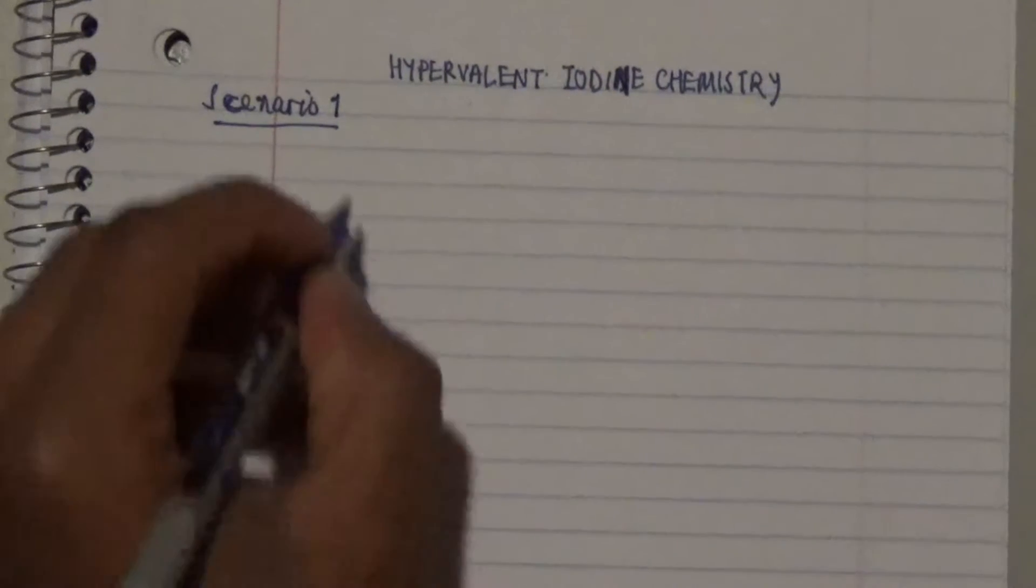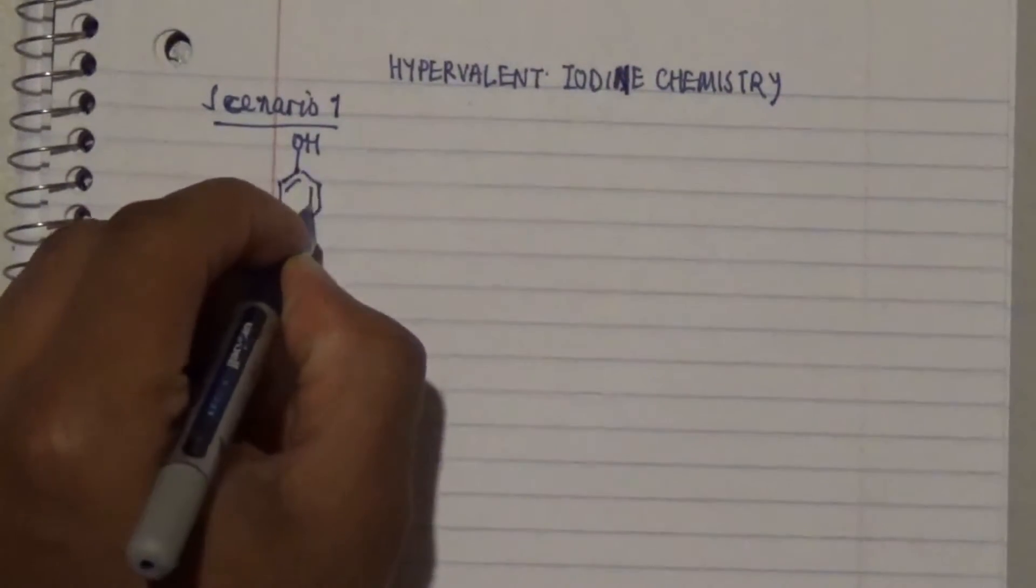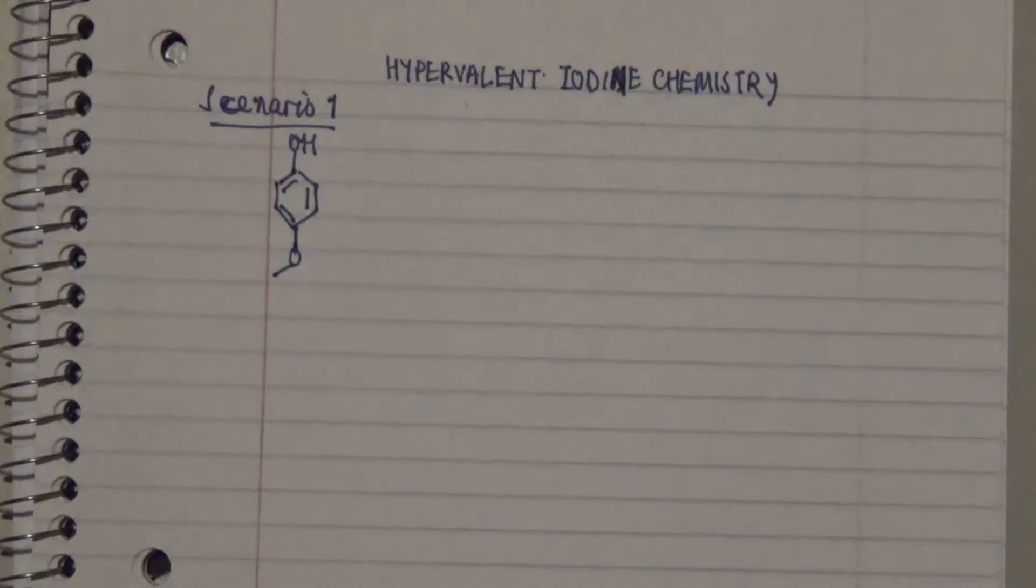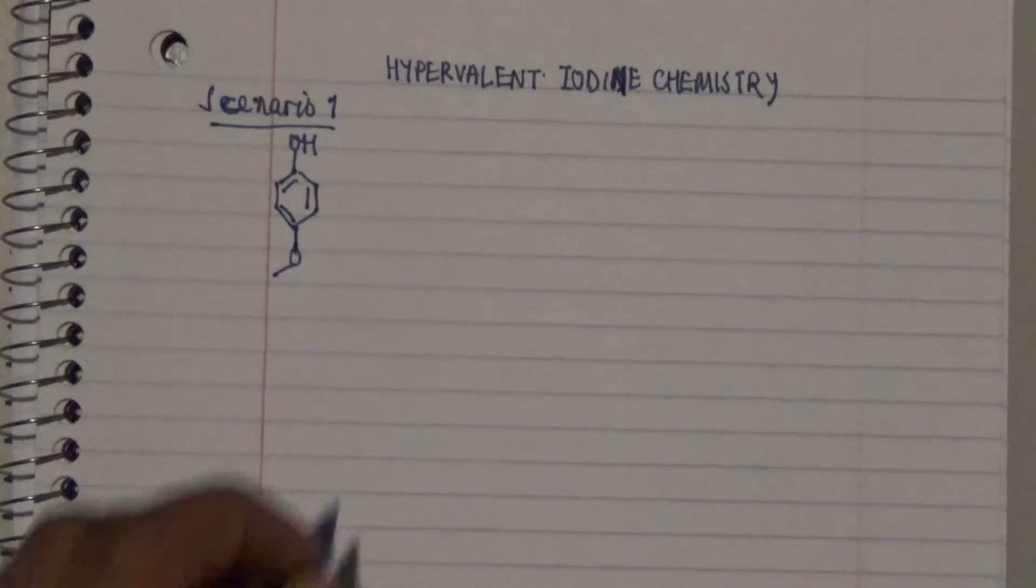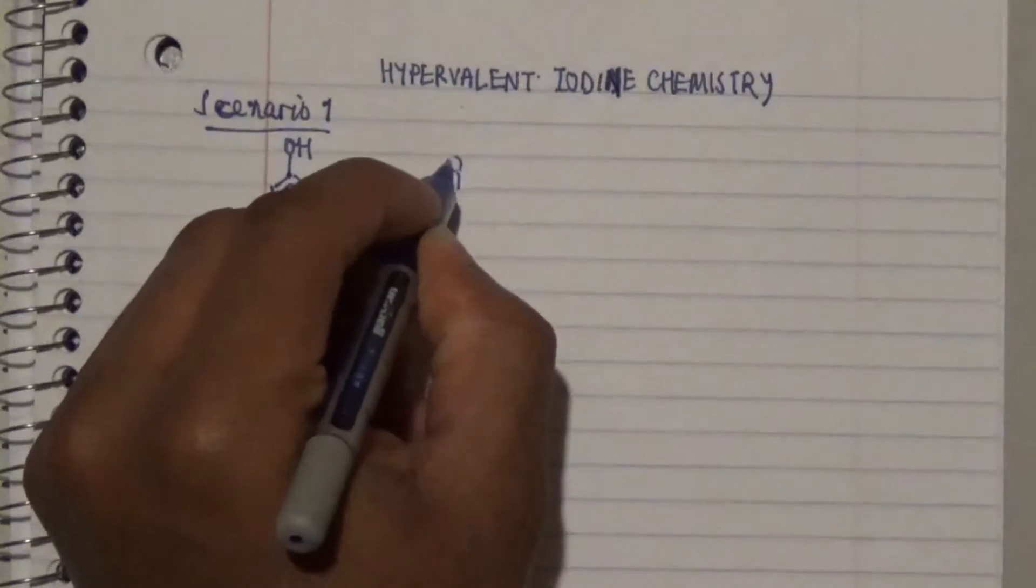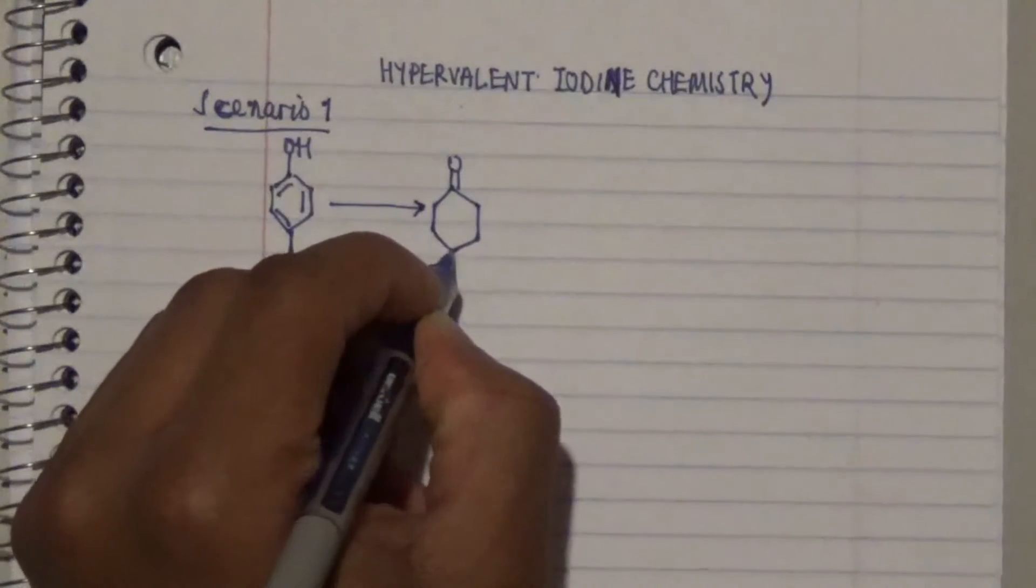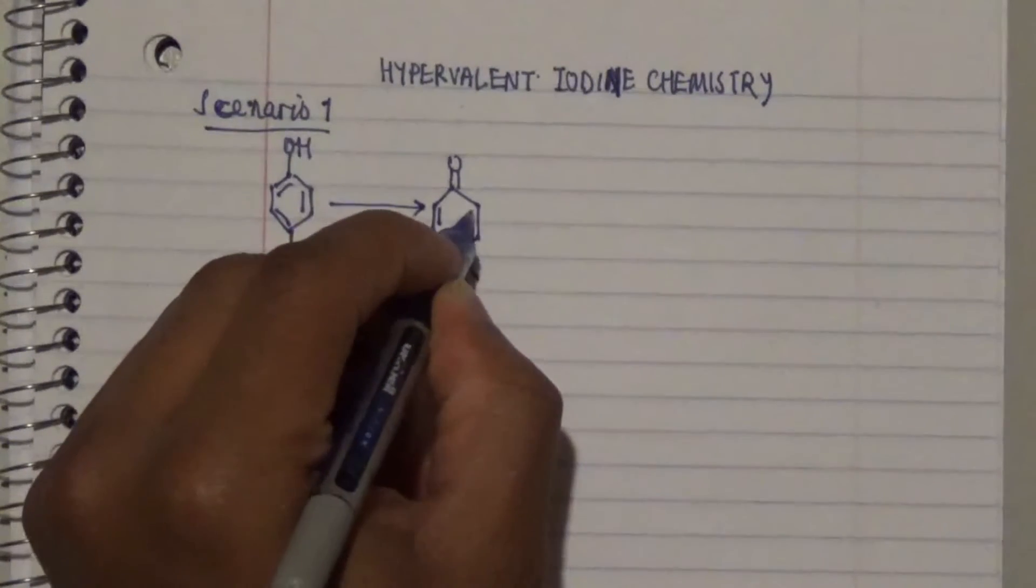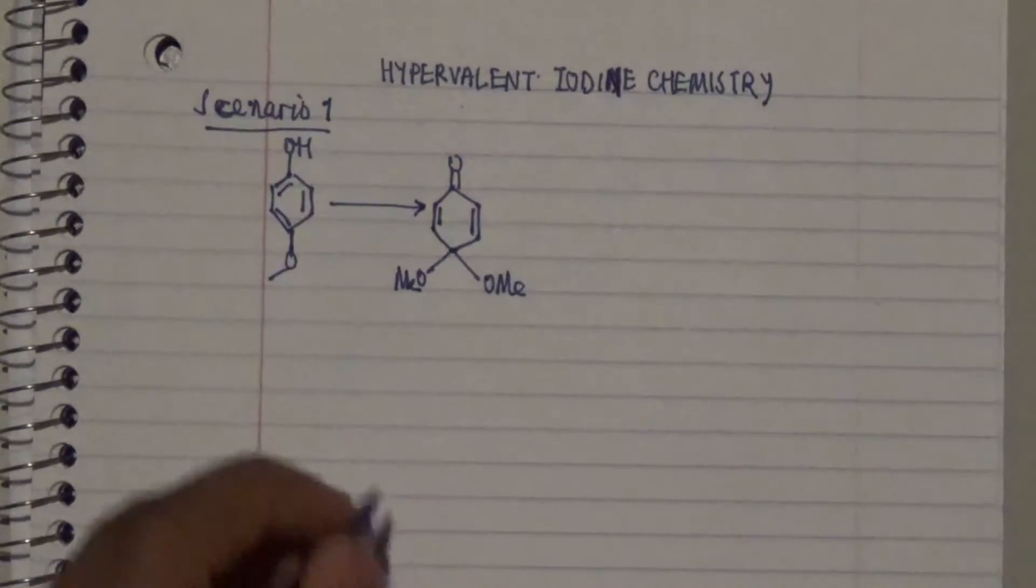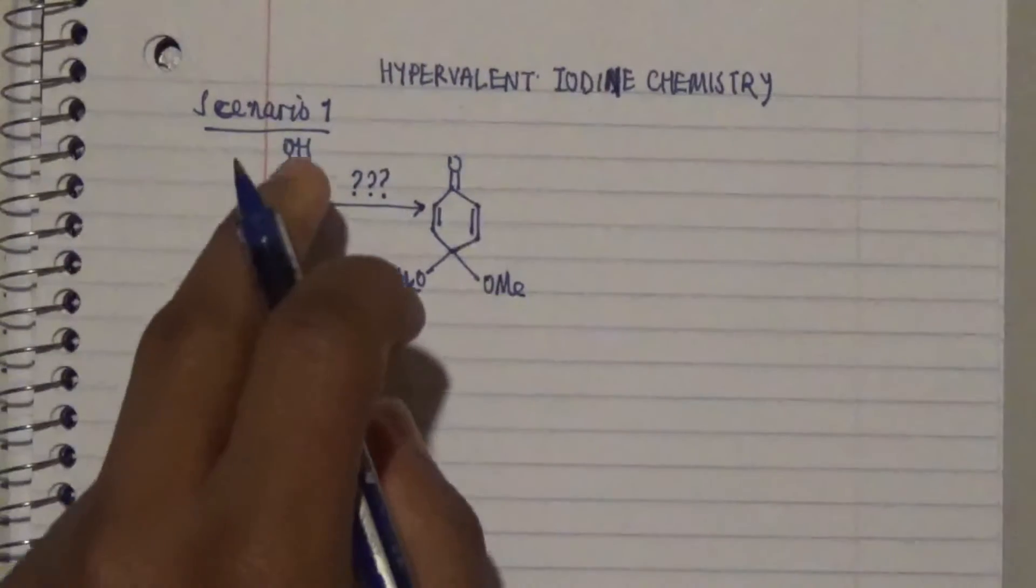We're going to transform this particular compound, which is a phenol attached to an ether group, and we need to transform this to form this particular compound. This is pretty much thermodynamically unstable because you're losing the aromaticity of this particular ring.